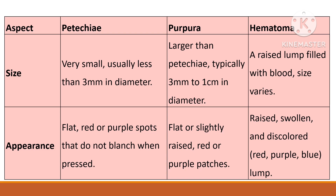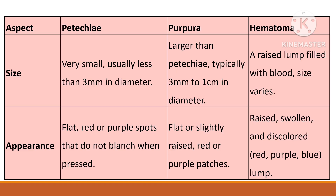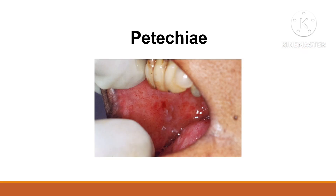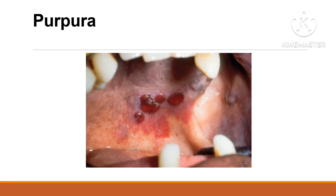Petechiae are small pinpoint red or purple spots less than 3 mm in diameter that appear when small blood vessels break under the skin; they do not blanch when pressed. Purpura are larger patches of red or purple skin discoloration, ranging from 3 mm to 1 cm, caused by blood leaking from ruptured vessels. Hematomas are typically associated with trauma, while petechiae or purpura are often linked to underlying medical conditions or blood clotting issues.